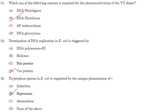Termination of DNA replication in E. coli is triggered by the Tus protein — answer is option D. The arrest of DNA replication in E. coli is triggered when the replisome encounters the Tus protein.